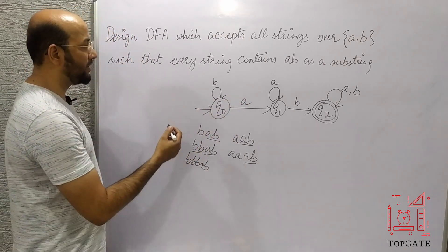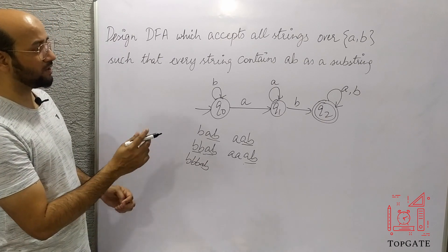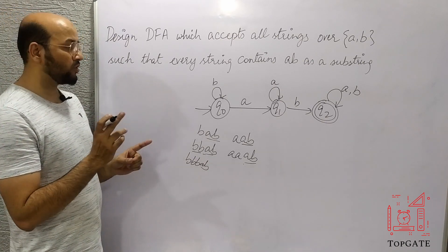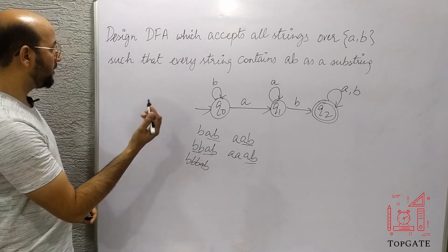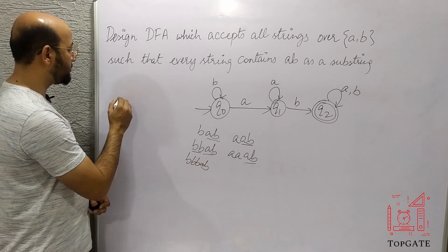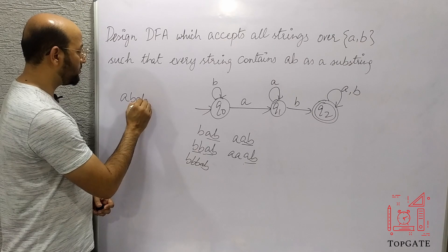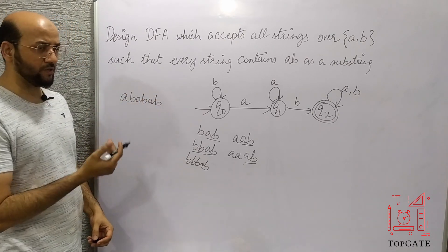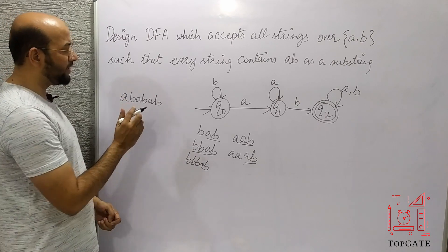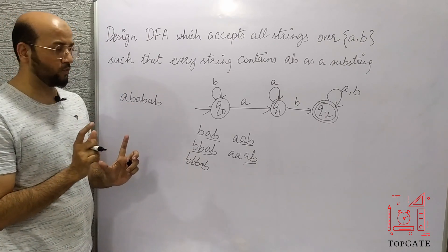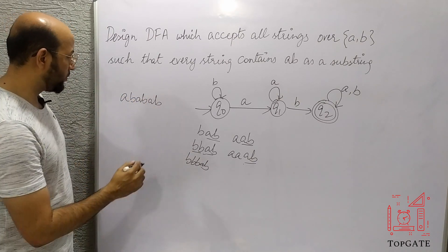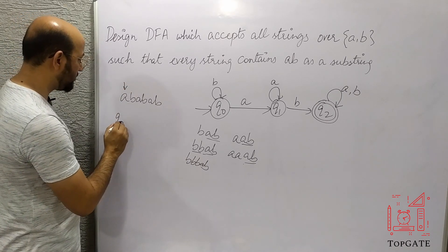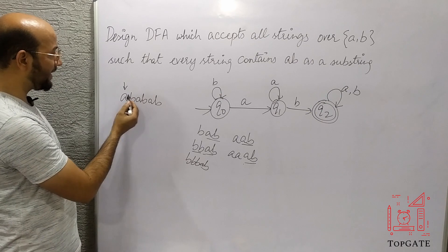Let's verify whether this DFA is correct. I'll check with a correct string first — it should be accepted — and then check a wrong string — it should be rejected. The correct string I'll use is 'ababab', which contains three AB substrings. I only need at least one AB, so this should be accepted. Starting with the initial state q0, the pointer is on the first character.